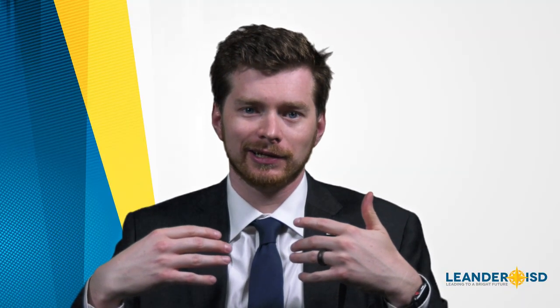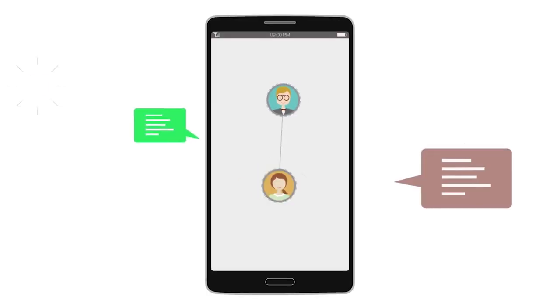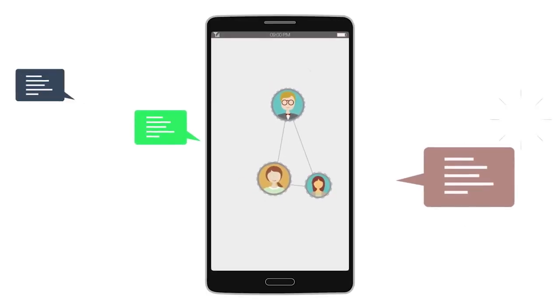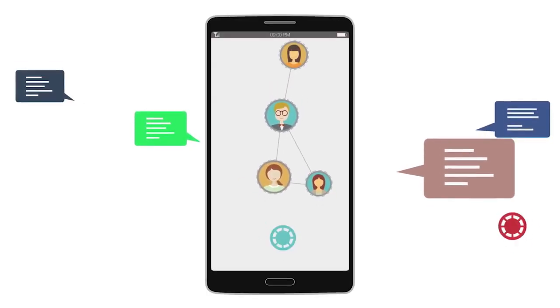The process we're going to follow through this attendance area change involves a lot of opportunities for community feedback. Our process actually starts with us putting out and utilizing a new tool called ThoughtExchange to get the different characteristics of a successful boundary plan, get that input from our community, and also to figure out what neighborhoods we really want to target for possible changes in realignment.